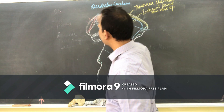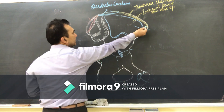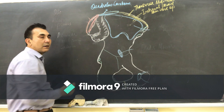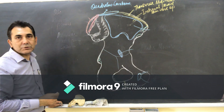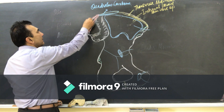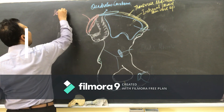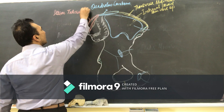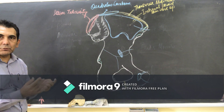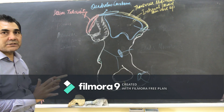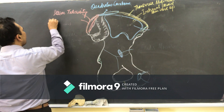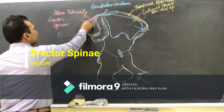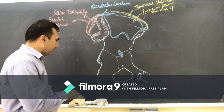When the iliac crest reaches the posterior side, before the posterior superior iliac spine, there is a tuberosity called the iliac tuberosity. This whole iliac tuberosity surface area is for the attachment of the erector spinae muscle.